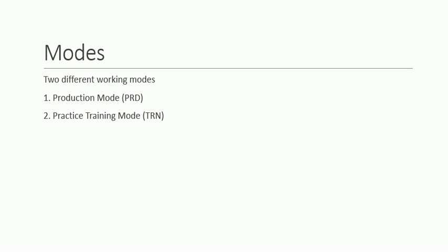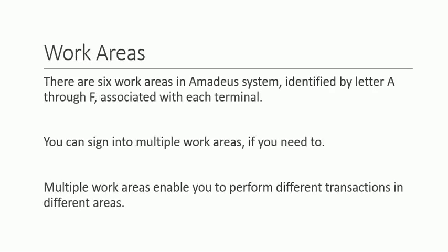Using these modes, we will tell you about the different functionalities of the Amadeus airline system. The Amadeus reservation system has different work areas identified by a letter from A through F associated with each terminal. You need a duty code and a work area to identify your sign, and you can sign into multiple work areas. Amadeus provides six different work areas which include hotel booking, airline booking, reservation booking, and meal changes. Whenever you have to select a certain item, you just need to change your duty code.